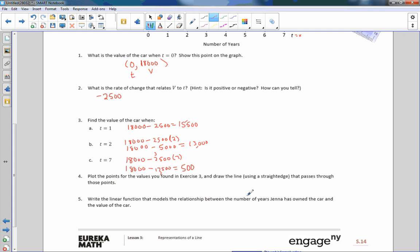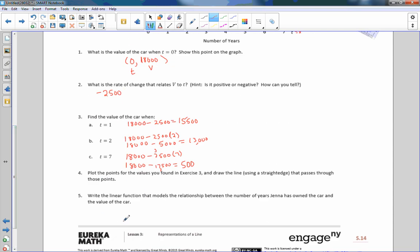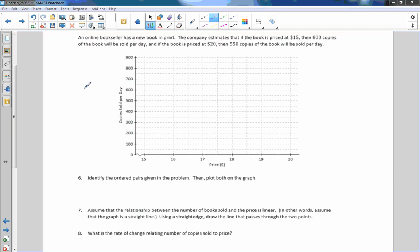Write the linear function that models this relationship. Y equals, and in this case, Y is V. So V equals negative $2,500 times T plus $18,000. I also could have written it this way: value equals $18,000 minus 2,500T. This is acceptable and so is this. This is more likely the one that you would use though because of the way we solve the problems here when we plugged in T equals 1, 2, and 7.